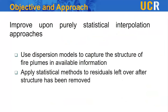We use dispersion models to capture the structure of fire plumes from available information. The assumption is that dispersion models have the physics built in so they remove the structure, and what is left over — the residuals — can then be treated with purely statistical models because in principle they are random. Those two approaches can be combined. This is one way of using dispersion models to improve spatial and temporal resolution.